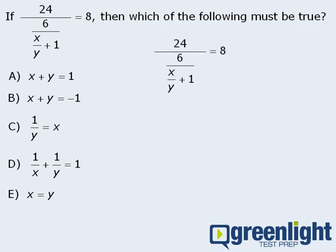First, notice that we have this complicated fraction in the denominator of an even larger fraction. Now, if we cover up this part for the moment, things become much clearer. Here we have 24 divided by something equals 8. So what does this tell us about the something that we're covering up? Well, that something must equal 3, since 24 divided by 3 equals 8. This means we can take this part here and set it equal to 3.